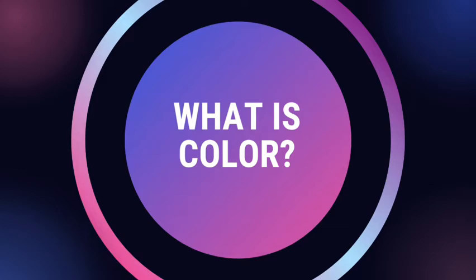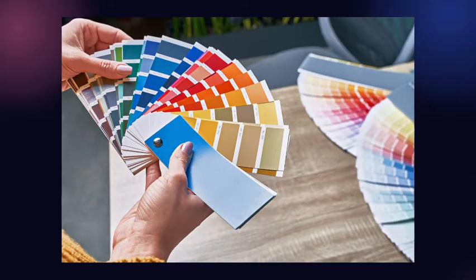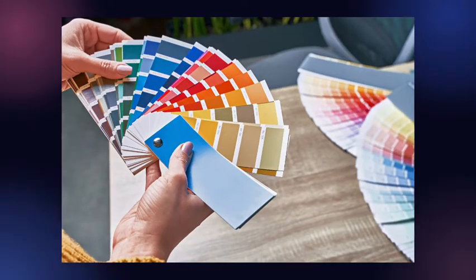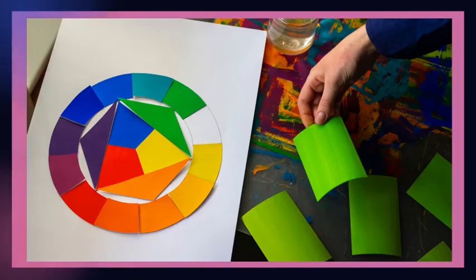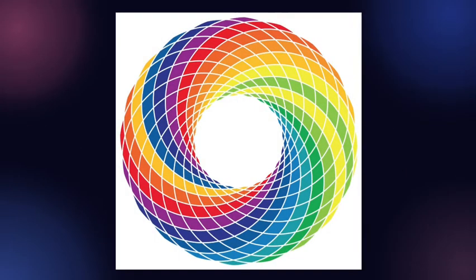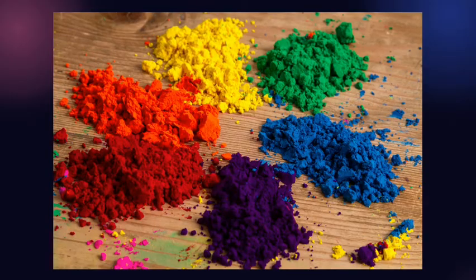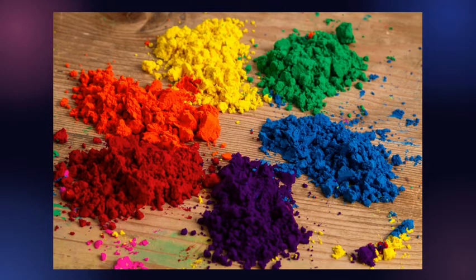What is color? Color is the sensation produced in the eyes as a result of the composed light ray which is white light. This light is composed of seven colors in the spectrum which are red, orange, yellow, green, blue, indigo and violet.